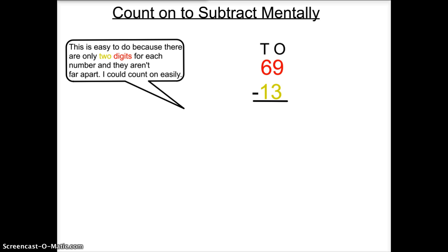Now I'm going to give you a few problems and we'll discuss whether counting on to subtract mentally would be appropriate. This problem, 69 minus 13, is easy to do because there are only two digits for each number and they aren't far apart. Therefore, I could count on easily.